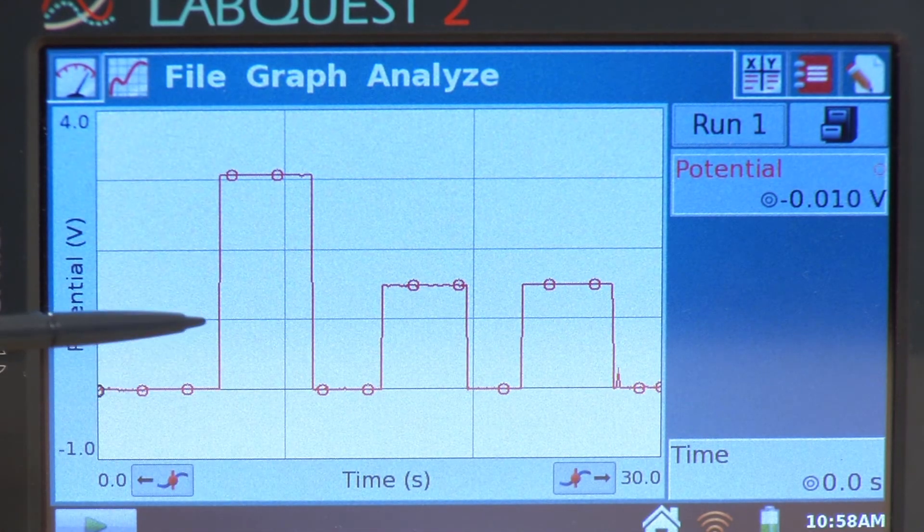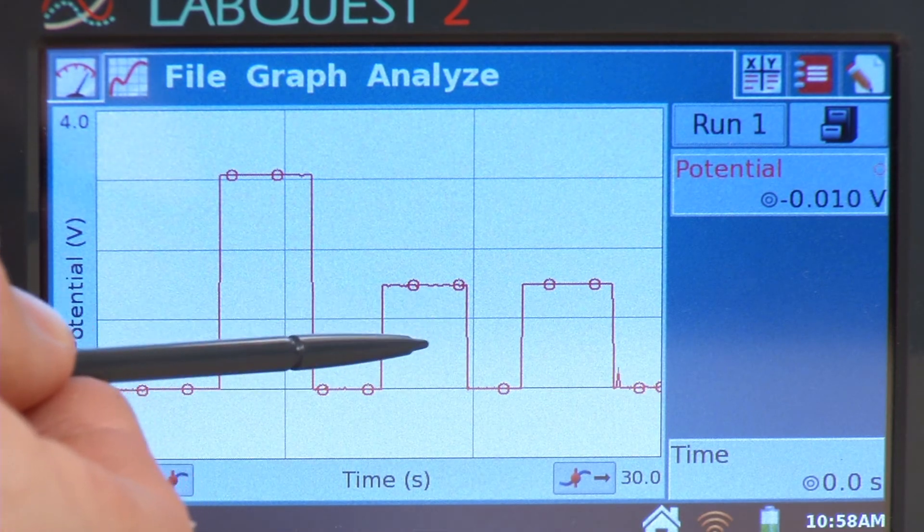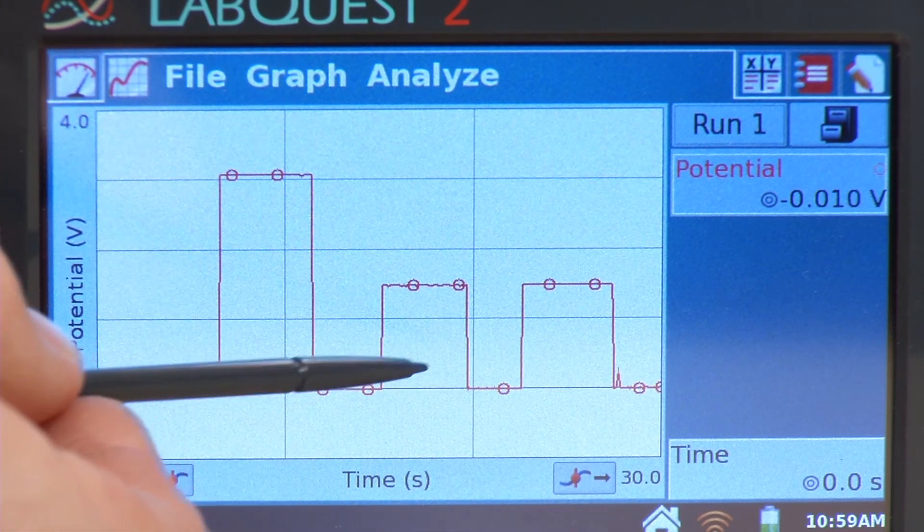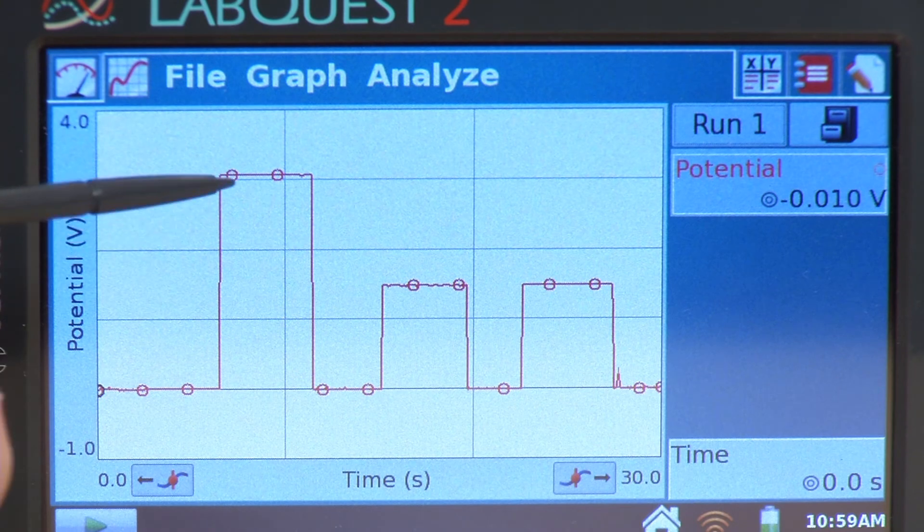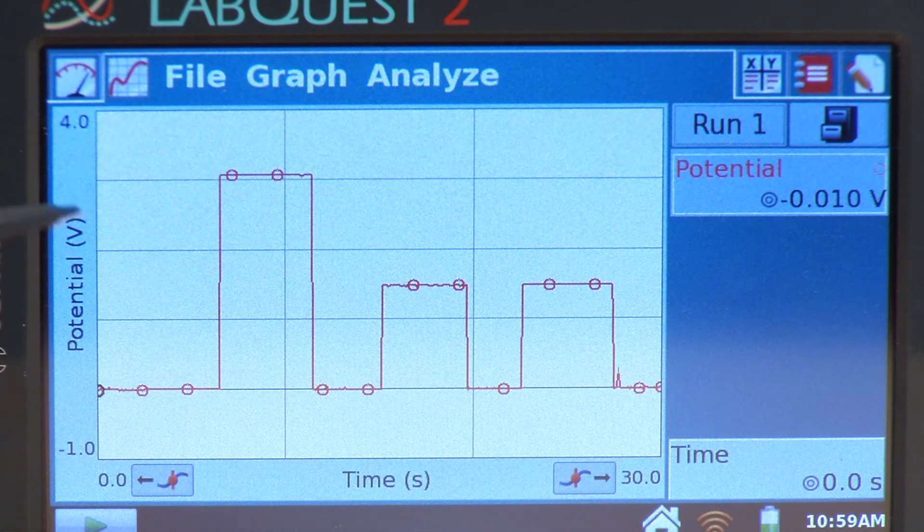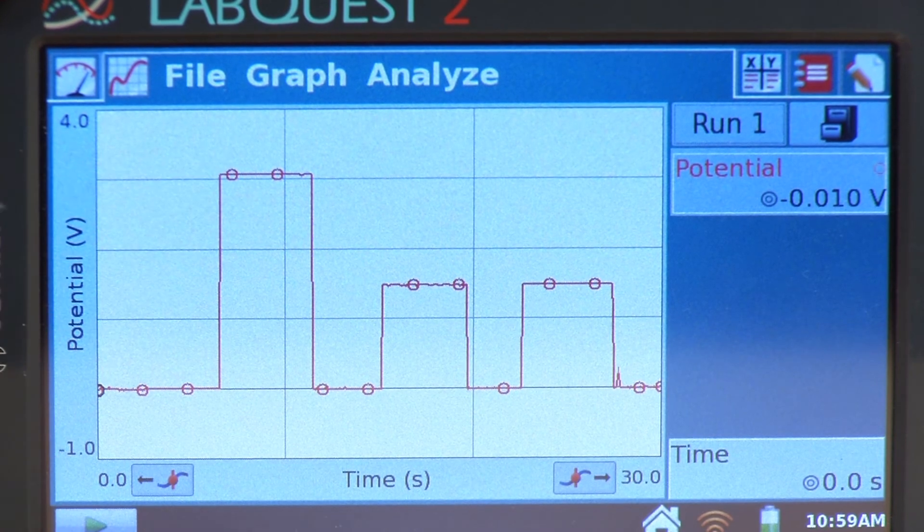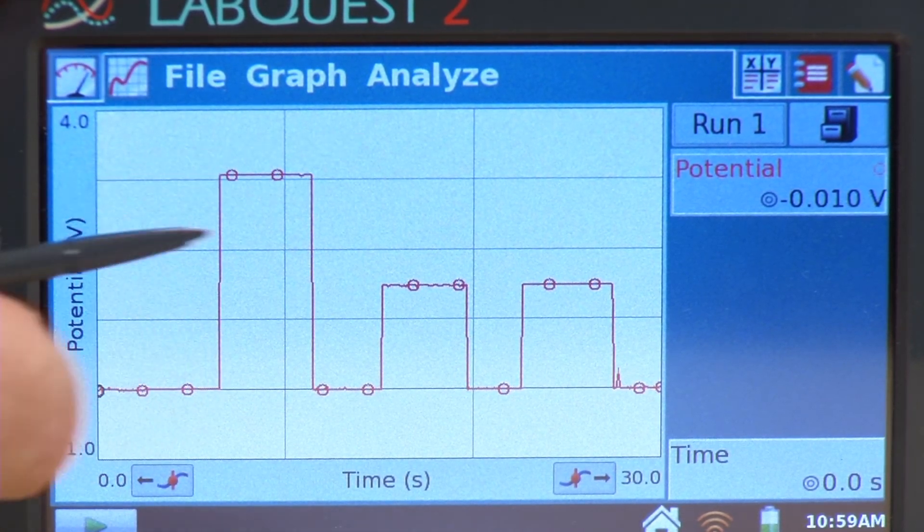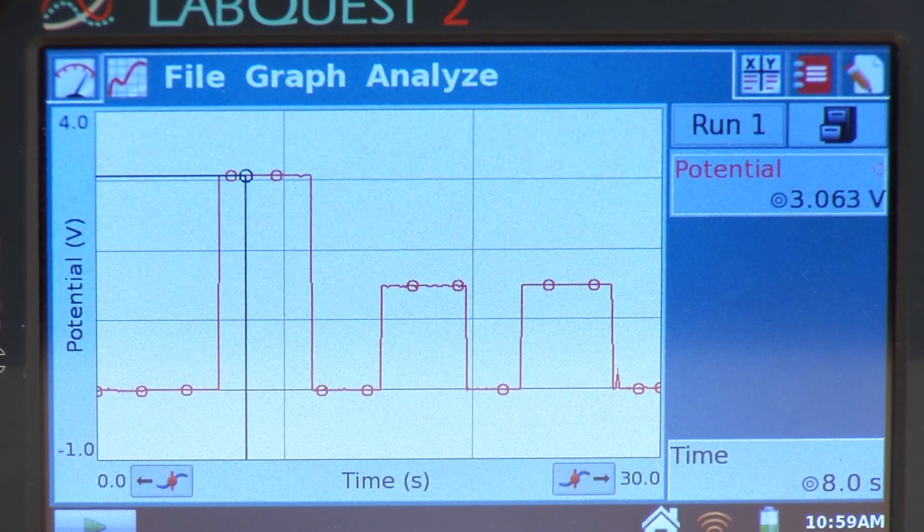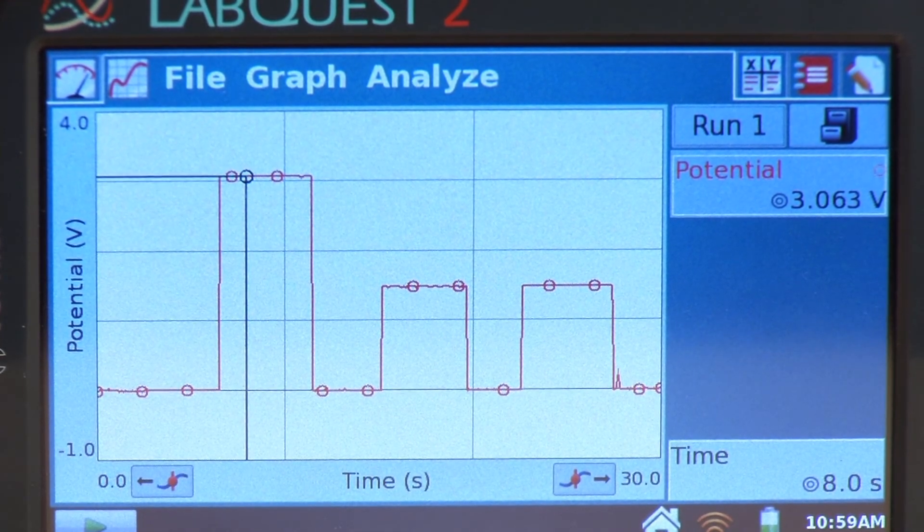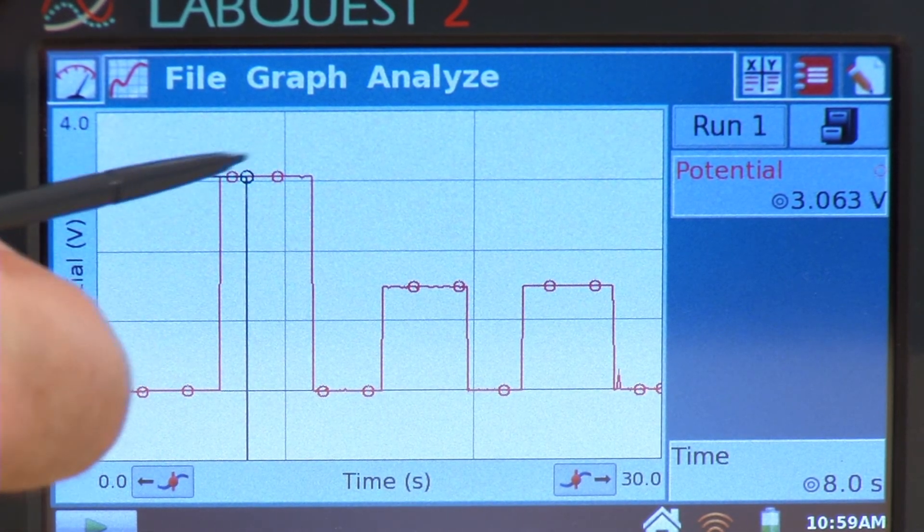Because it should be that the sum of the voltages, voltage drops around the circuit, should add up to the total voltage drop there from the voltage source. So to analyze this, the easy way might be just to examine a value up here. I'll tap there on the graph and I get my potential of about 3.06.